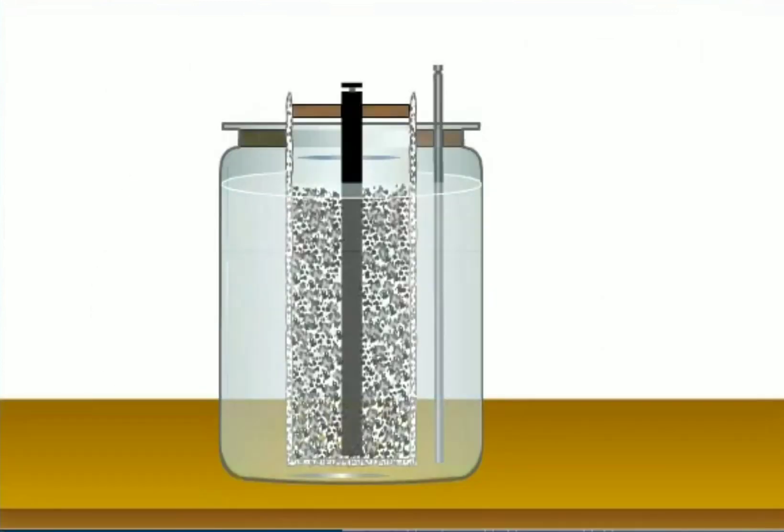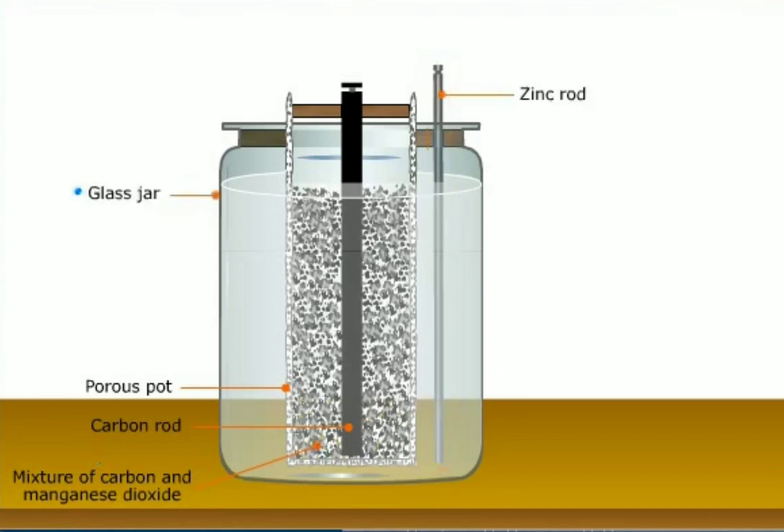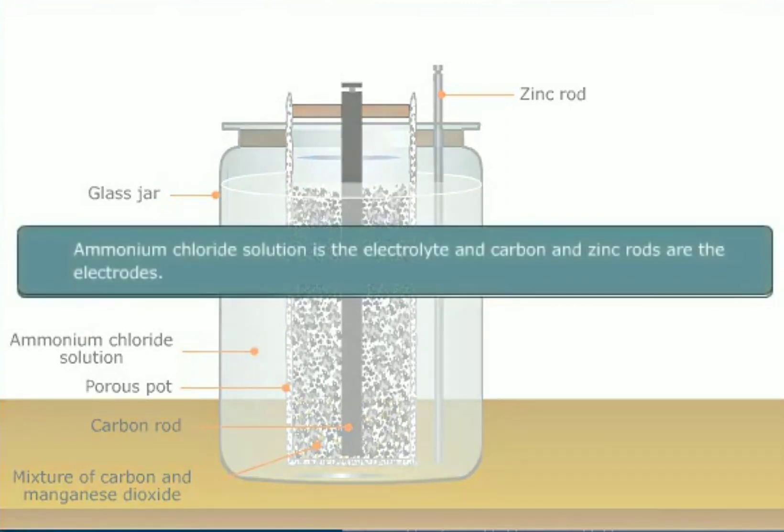In this cell, a carbon rod is placed in a porous pot containing a mixture of manganese dioxide and powdered carbon. The porous pot and an amalgamated zinc rod are placed in a glass jar containing saturated ammonium chloride solution. Ammonium chloride solution is the electrolyte and carbon and zinc rods are the electrodes.